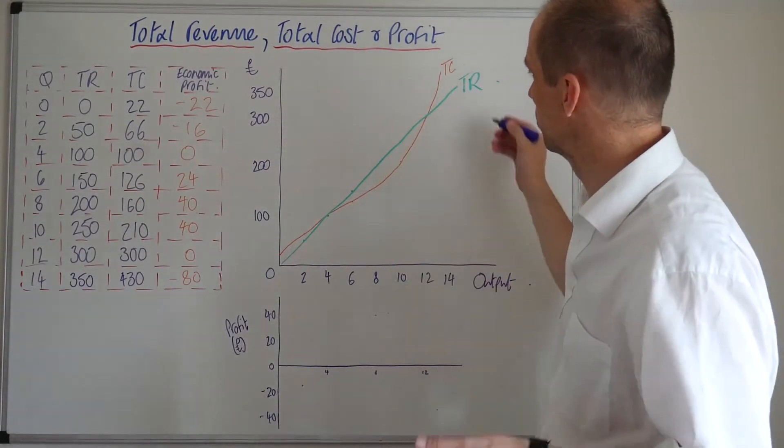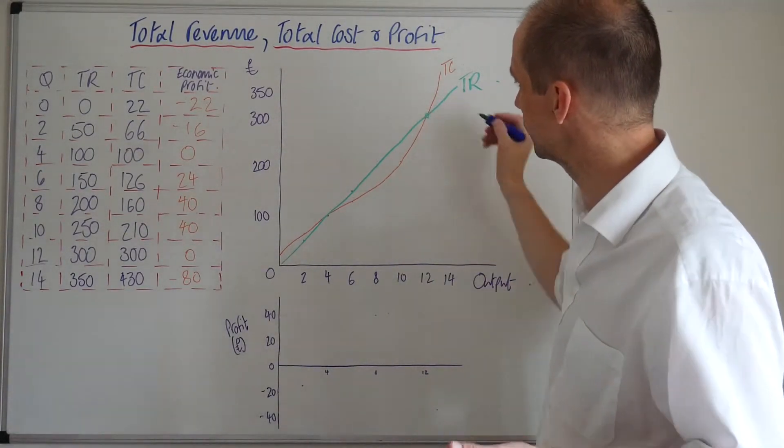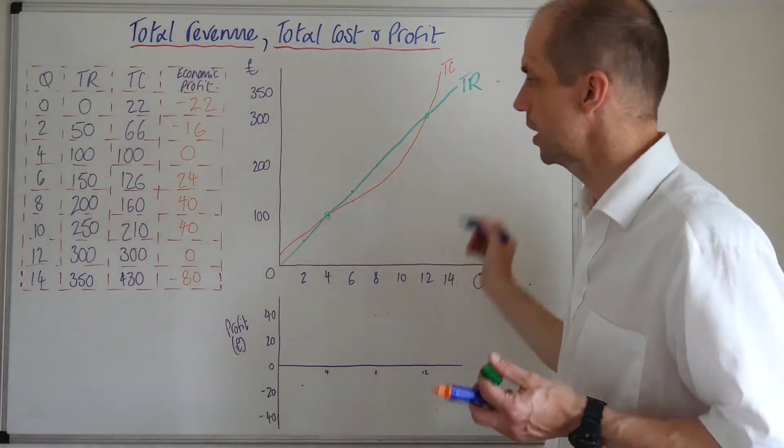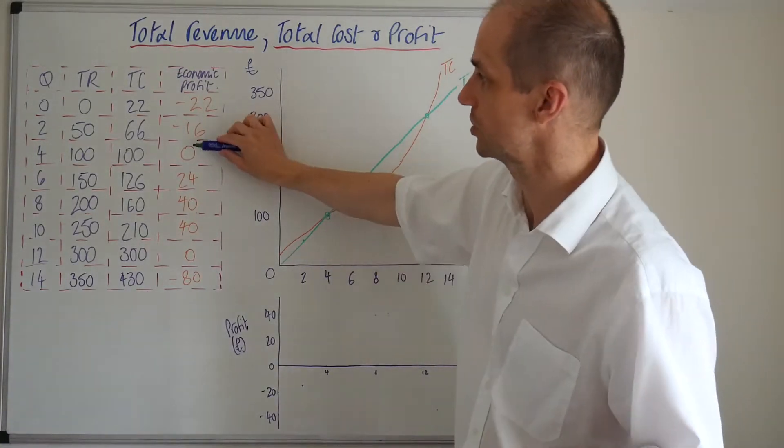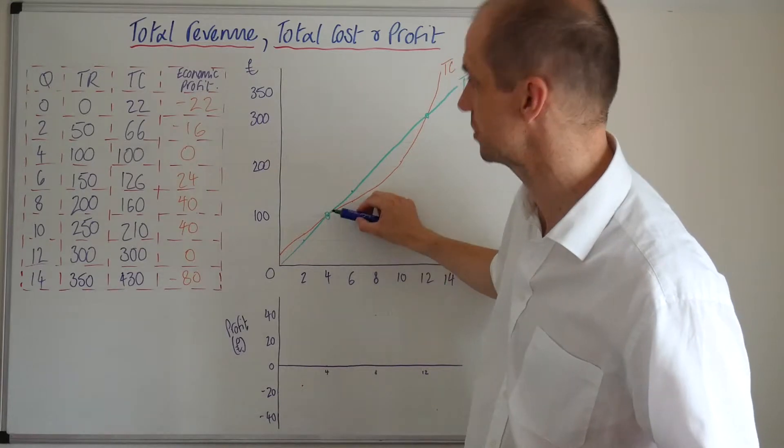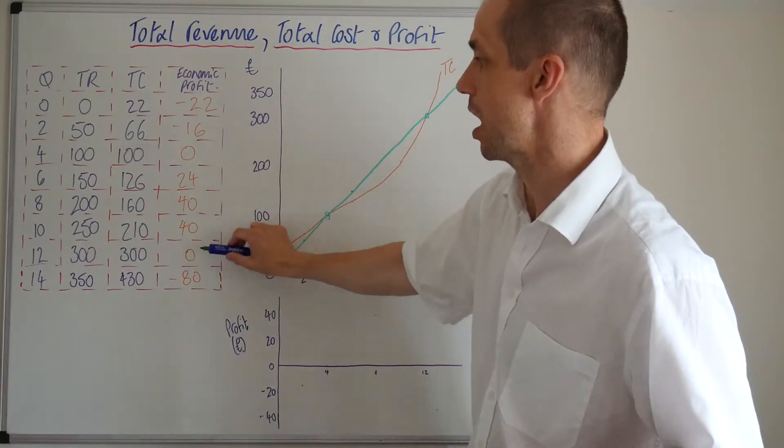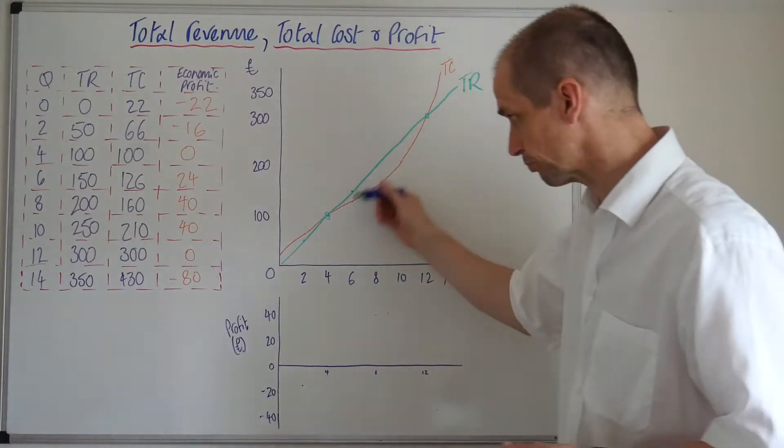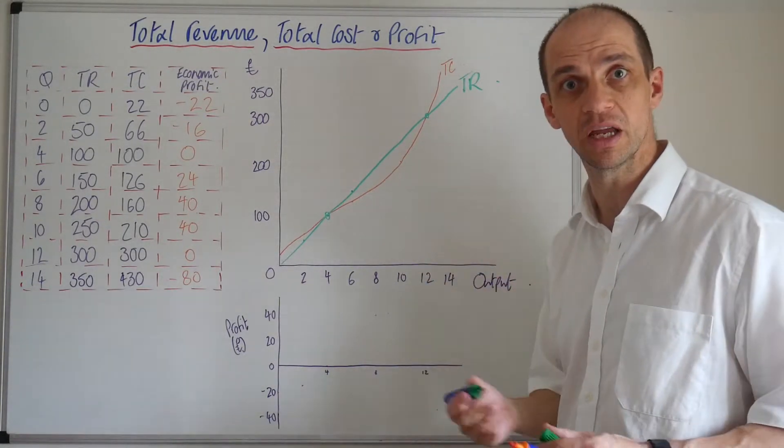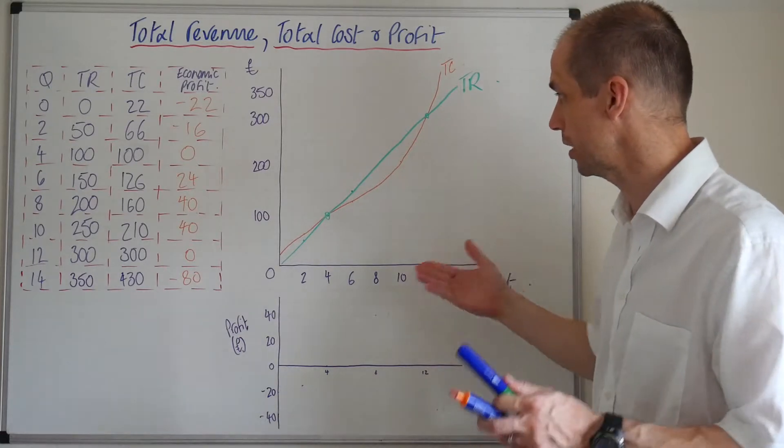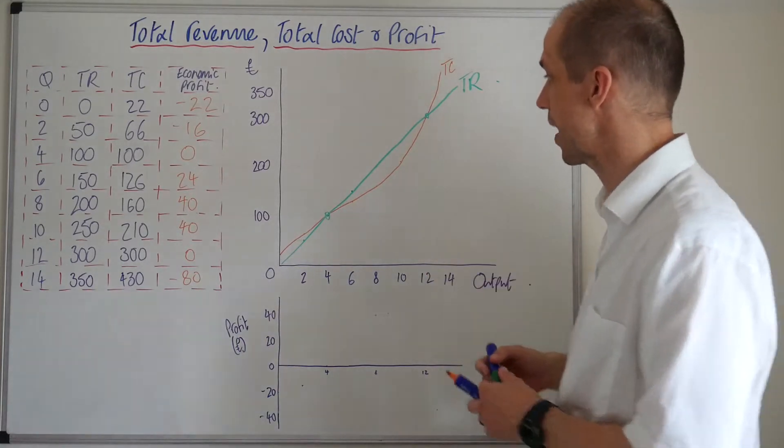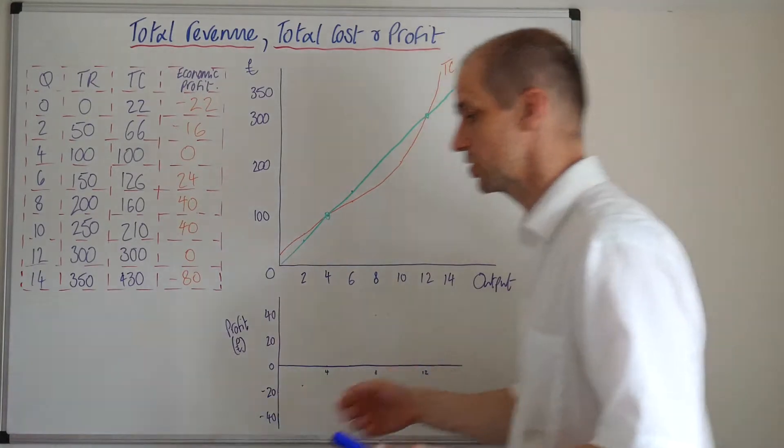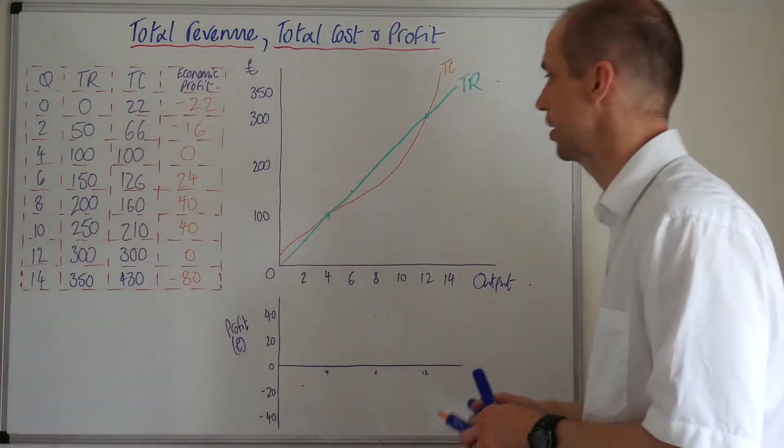So, okay, so what's really noticeable about this is we have two points of zero, of course, here and here, and we can see our zero points at the level of four units of output, and again at 12 units of output here. So we know those are zero marks. There is no profit being generated, no economic profit being generated at that point.